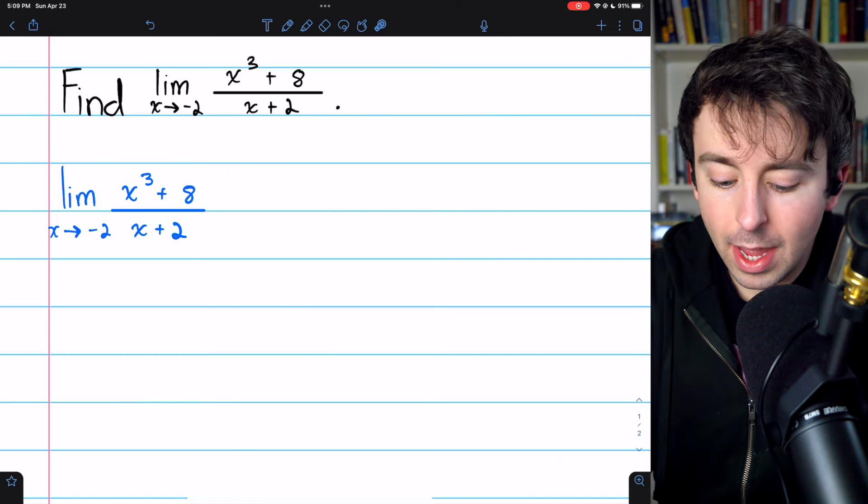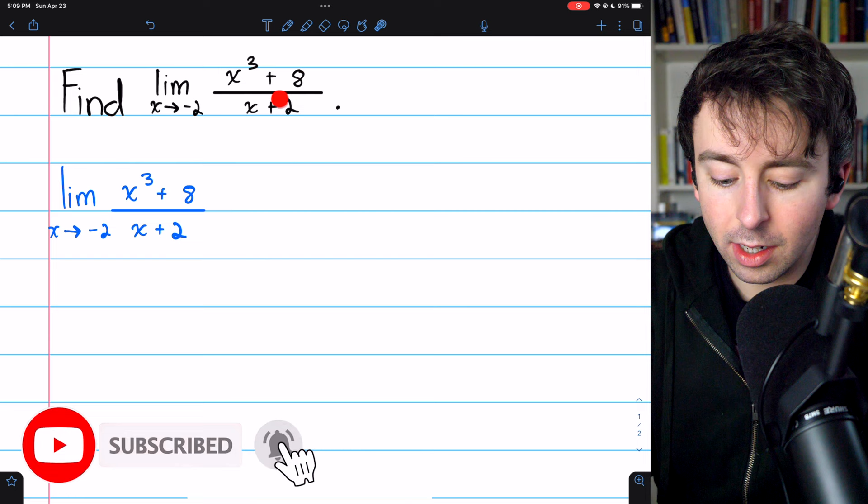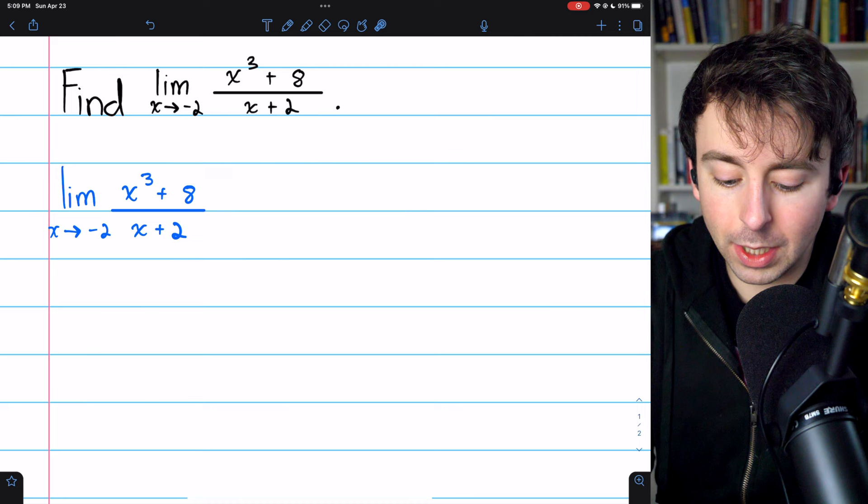We're going to find the limit as x approaches negative two of x cubed plus eight divided by x plus two. Certainly we can't substitute to evaluate this limit because plugging in negative two gives us zero over zero, which is indeterminate.